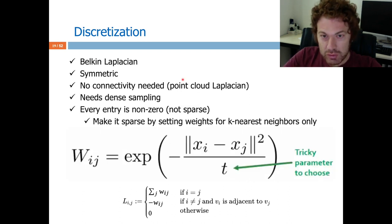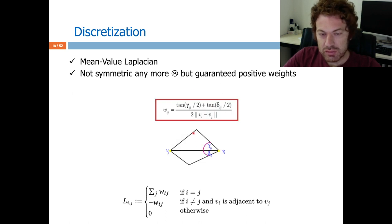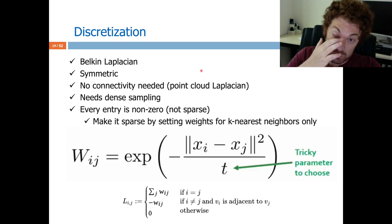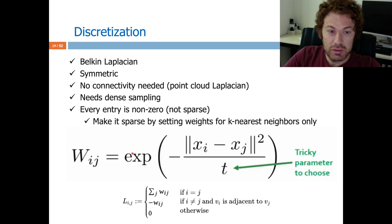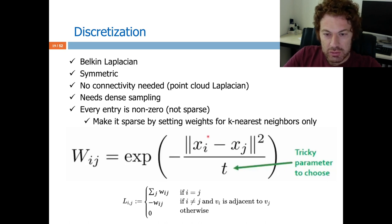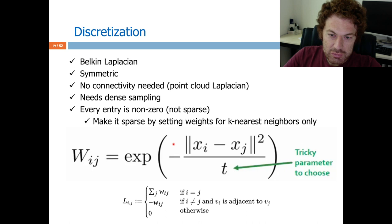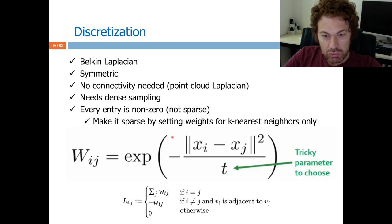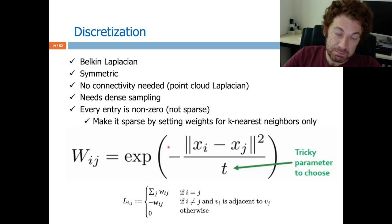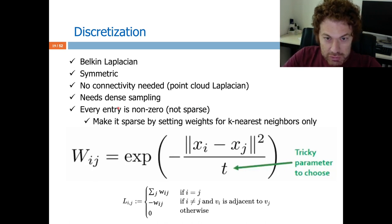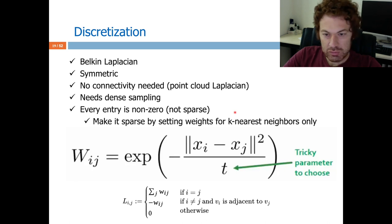Another discretization is designed for point clouds, where I don't have triangles and hence no angles. I can go to a kernel where I put a weight inversely proportional to the distance between xi and xk, normalized by a parameter. To make this work I need a dense sampling, which is not very efficient. Also it is defined for all vertex pairs, meaning I won't have a sparse matrix, making it hard to process and store. Luckily, I can make it sparse by attaching weights to the k nearest neighbors only and keeping zero for other entries.